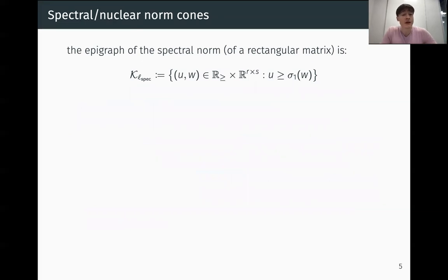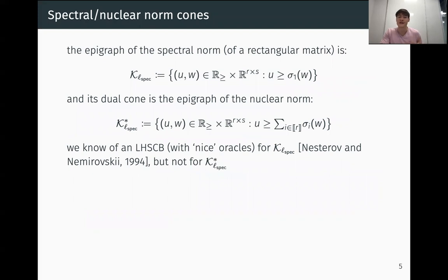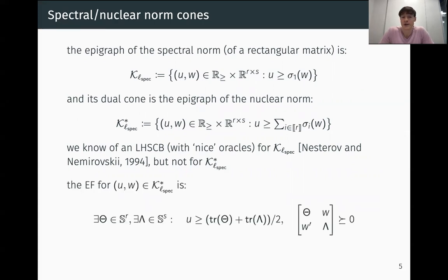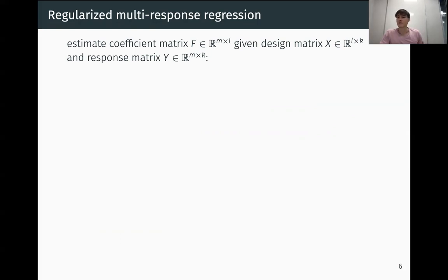Let's look at an example cone. The epigraph of the matrix spectral norm is a proper cone. It looks like this. Here, sigma one is the largest singular value. Its dual cone is the epigraph of the nuclear norm. That's the sum of the singular values. We know of an LHSCB with nice oracles for the spectral norm cone, but we don't know of one for the nuclear norm cone, but we might want to use the nuclear norm cone in practice. So here's an extended formulation for that cone. We have to introduce these additional variables and this linear constraint and a high dimensional PSD constraint.